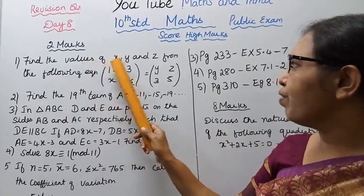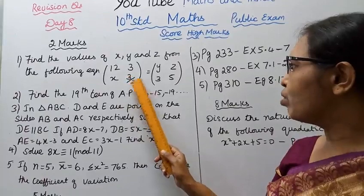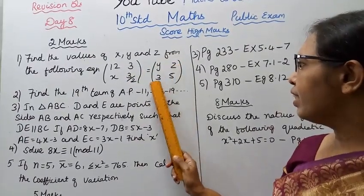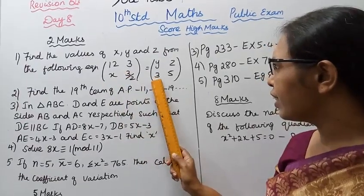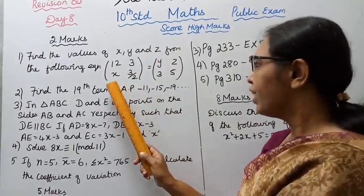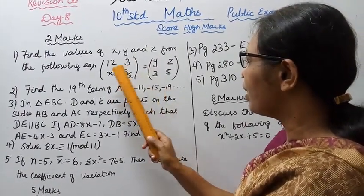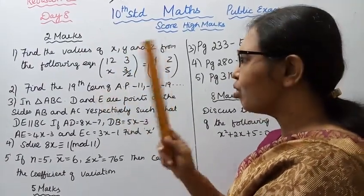Find the values of x, y and z from the following equation: (12, 3, x) over (3/2) equals (y, z, 3) over (5). We know that x is equal to this, then x equals 3, y equals 12, z equals 3. It is 2 marks.